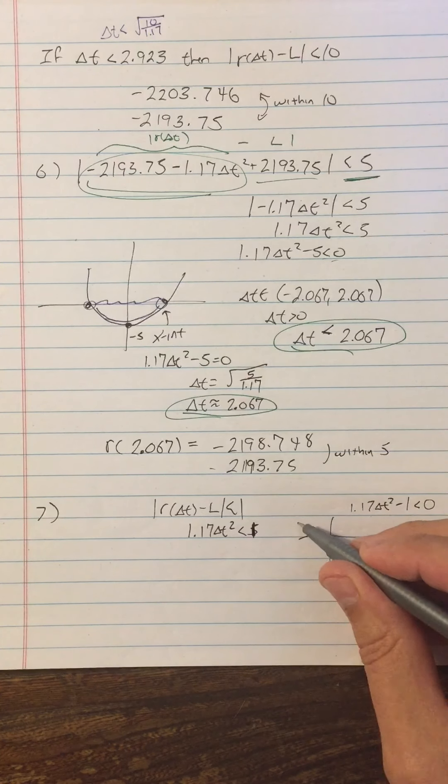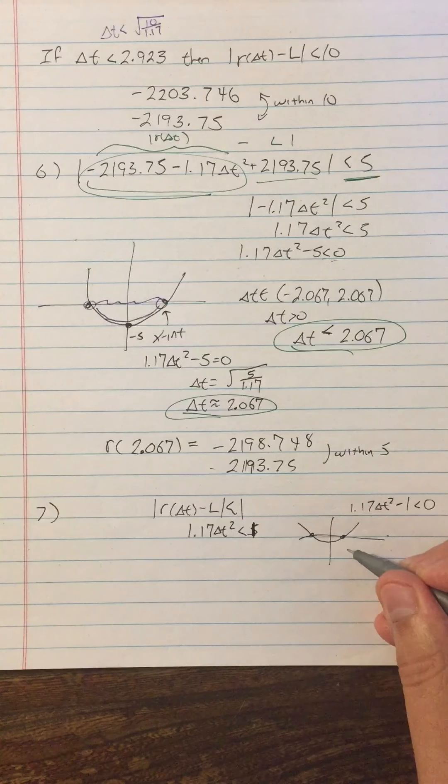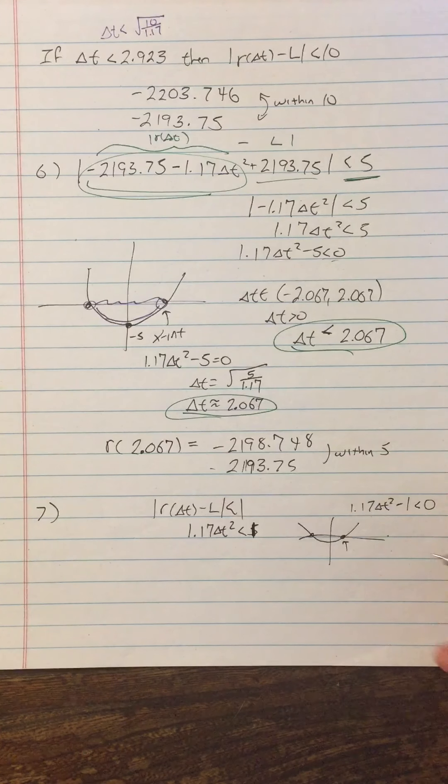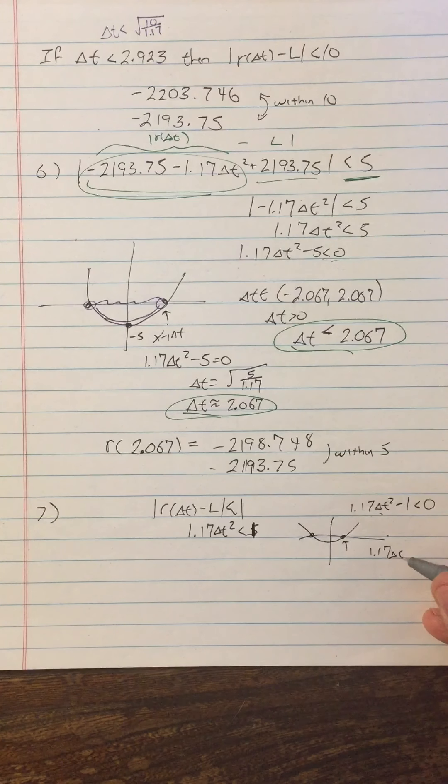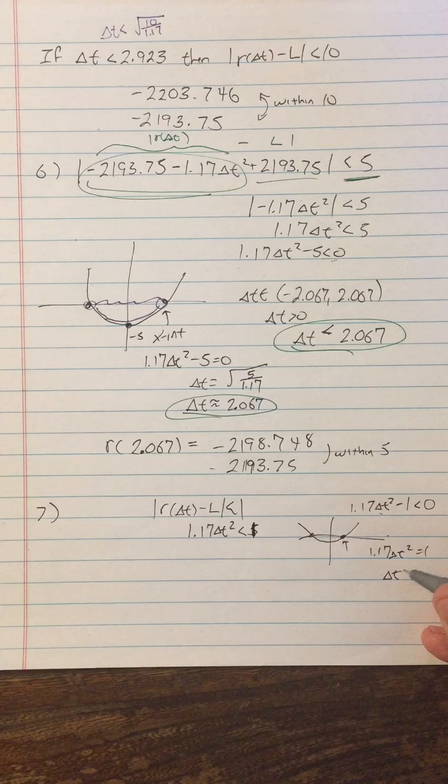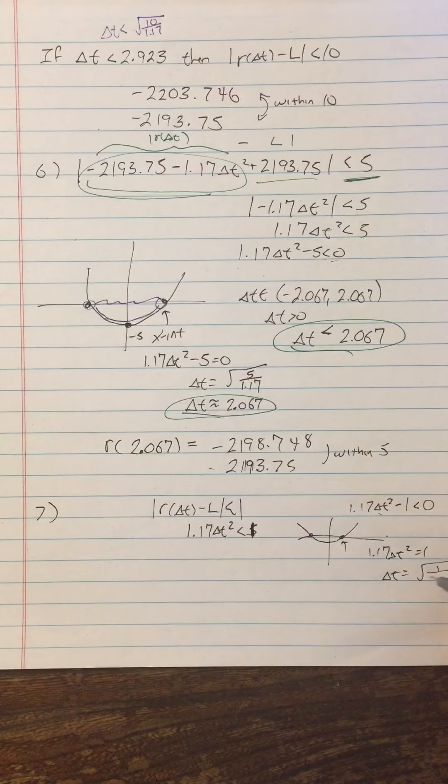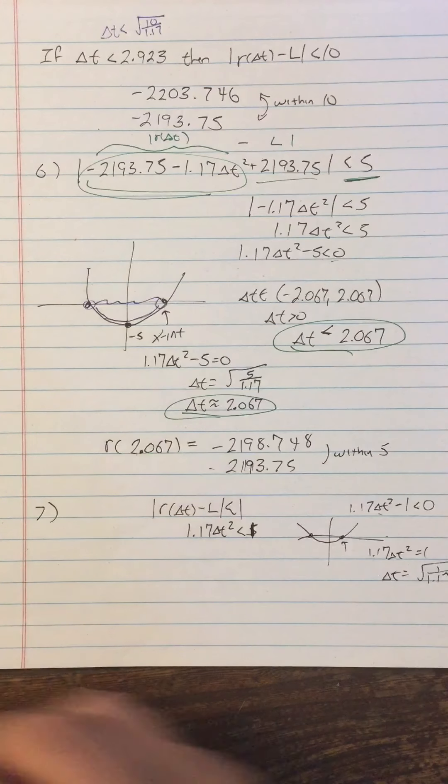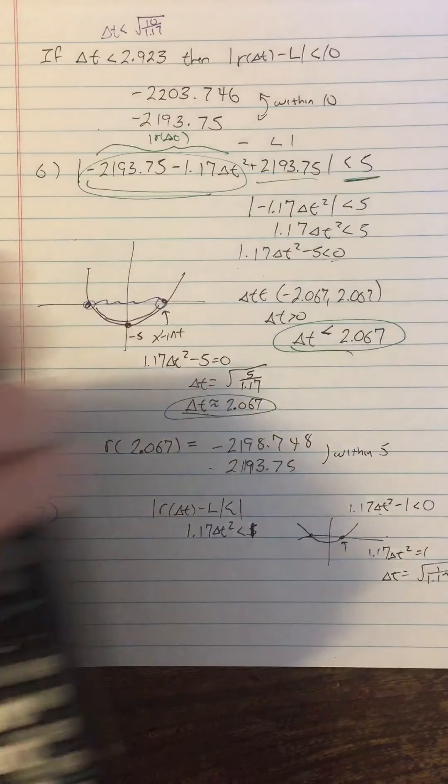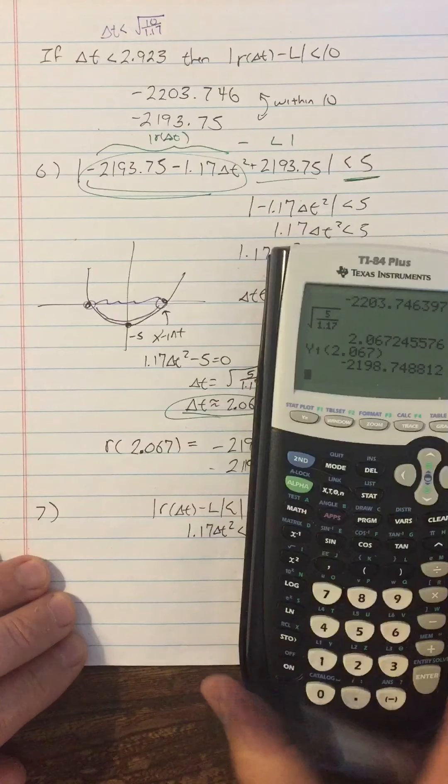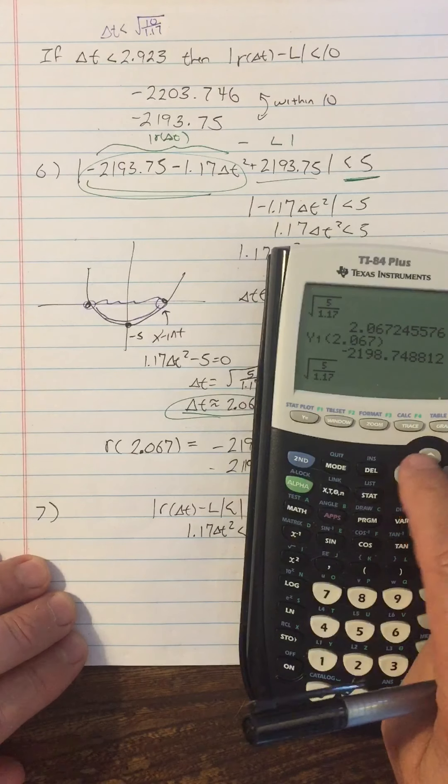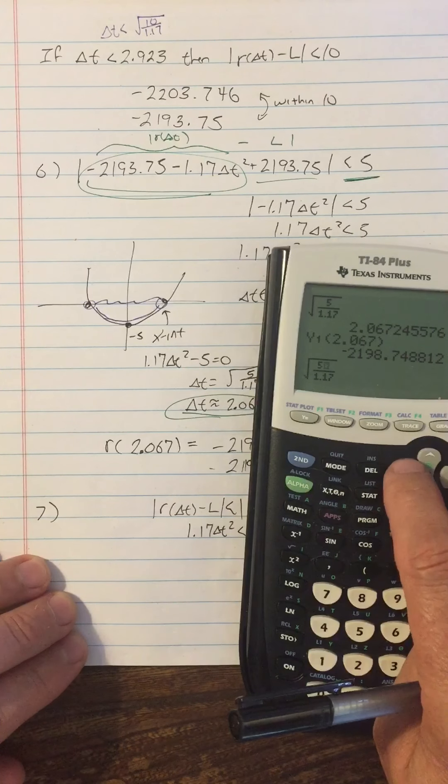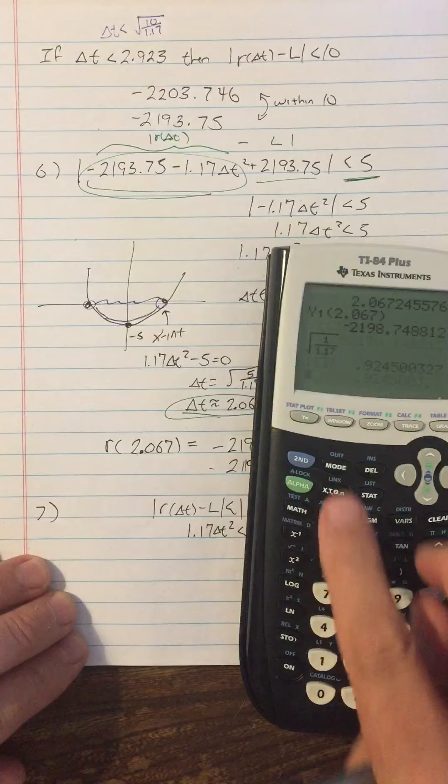And we know it's going to be a parabola, and we're going to have our x-intercepts here. We're going to get our x-intercepts by solving 1.17 delta t squared equals one. So we're going to have delta t equals square root of one over 1.17. And we can go to that on our calculator and just put that here. And we're going to change the five to a one. And we get a decimal.